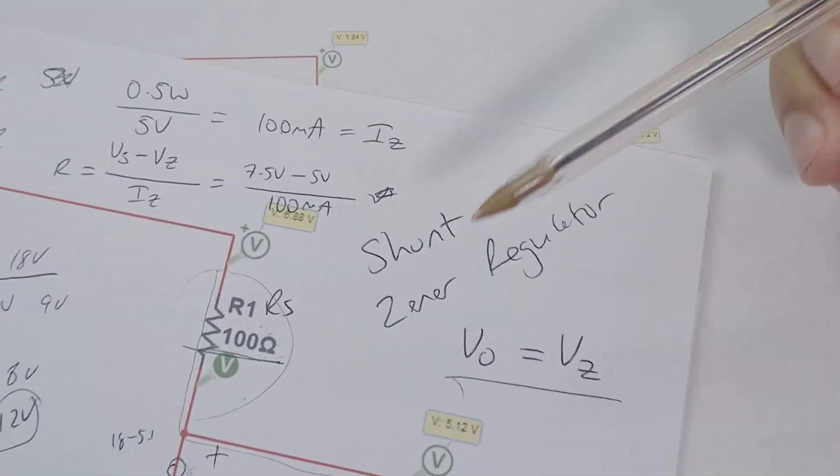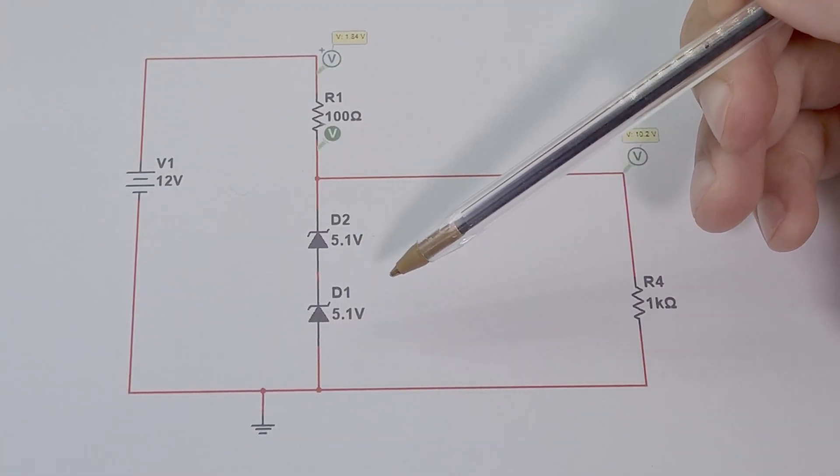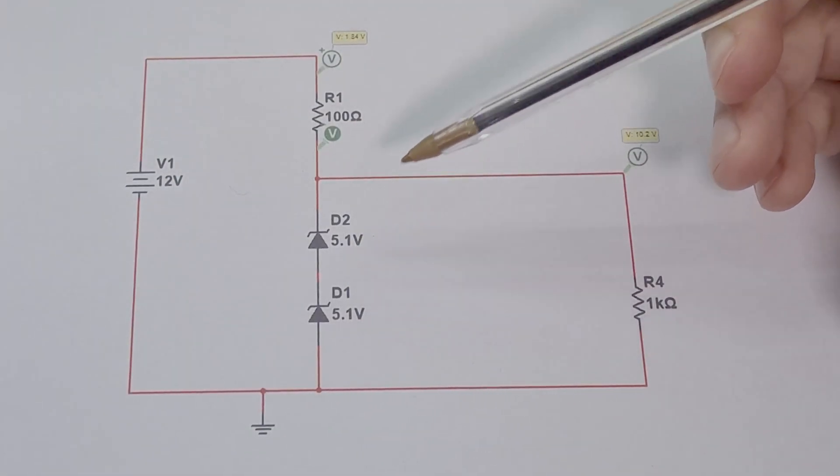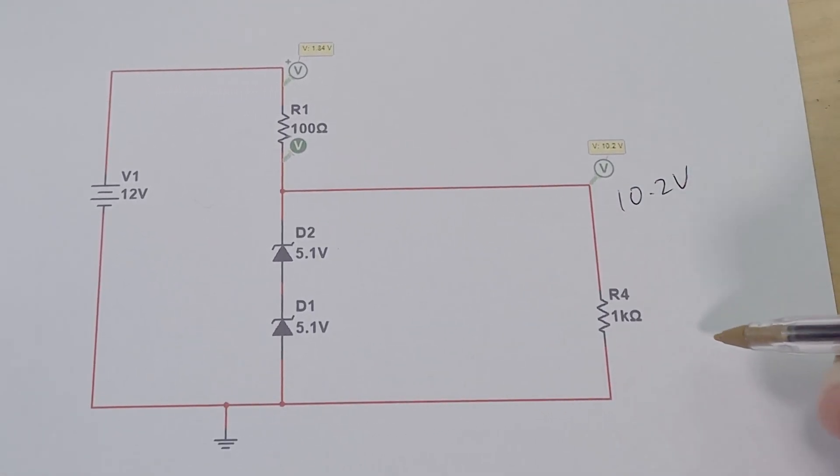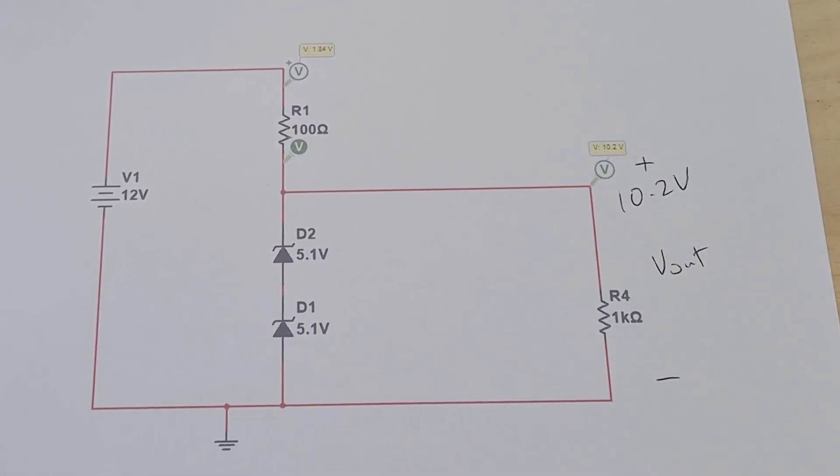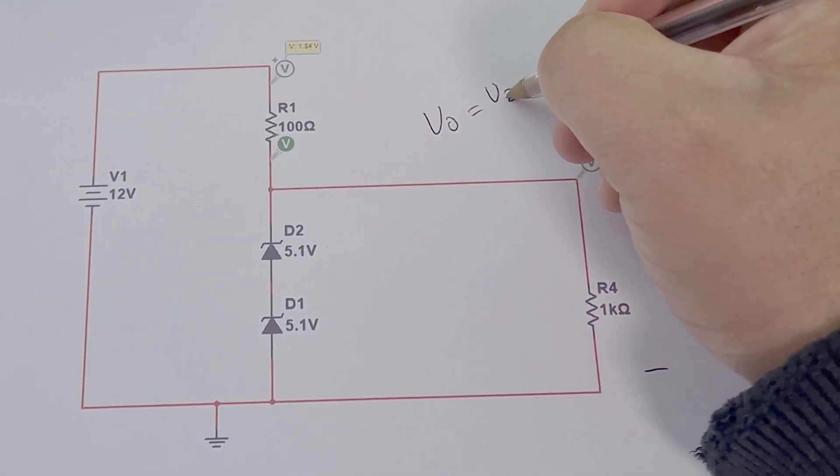So literally the same exact circuit as the last video. But this time now we've got two Zener diodes in series. So what that does is that actually creates a 10.2 volt output across here. So V out now is still equal to VZ.